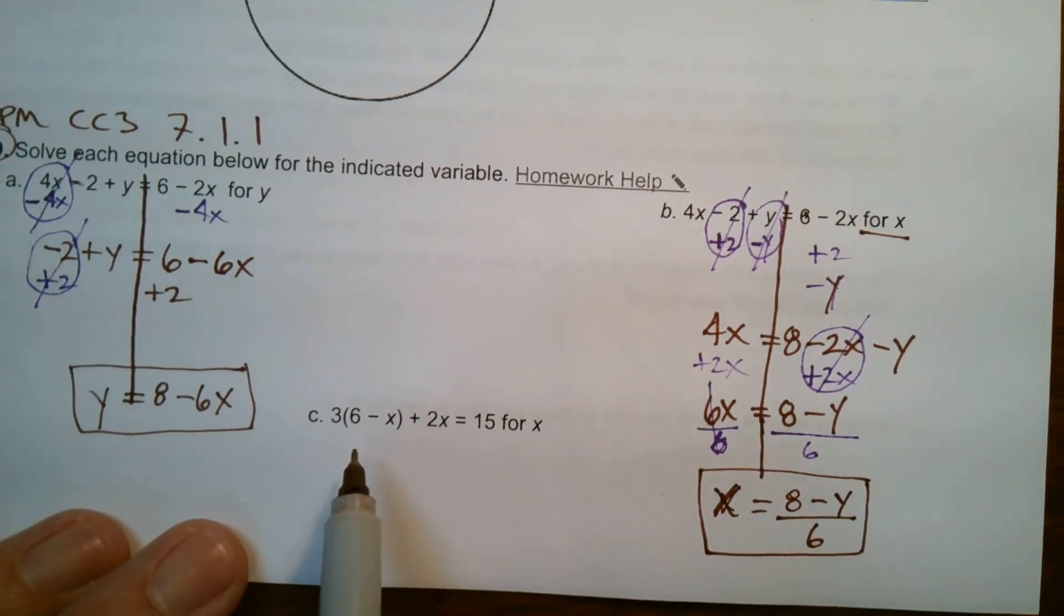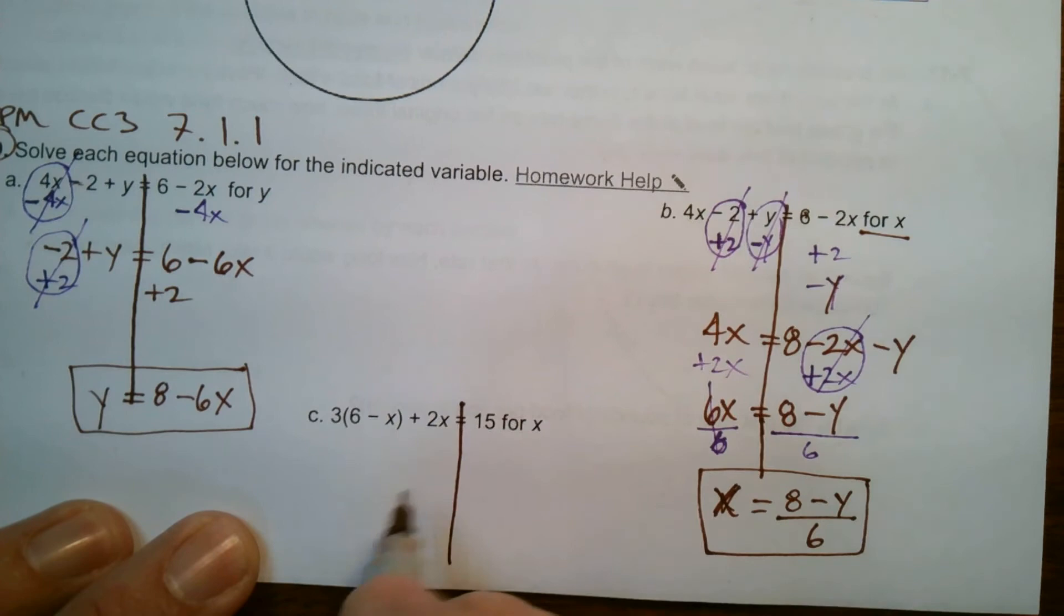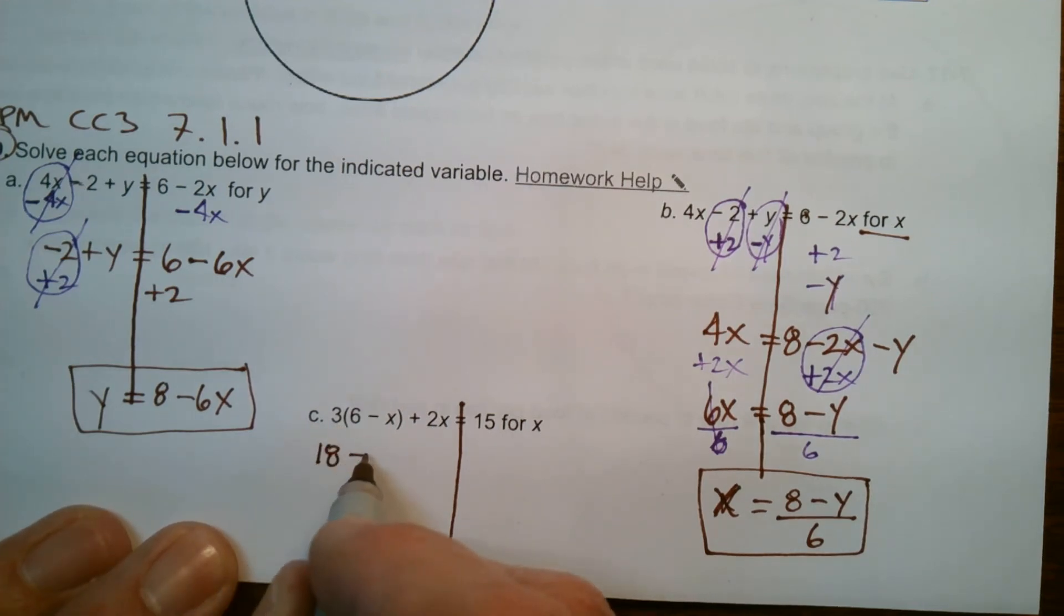Last one. This time solve for x. And if I look closely, that's all I see is just x's. So that's good. There's no other variables. And all my x's are on this side. So I'm going to have to clean this up first. Remember, the first step is always distribute, then combine like terms. So this becomes 18 minus 3x when I distribute the 3 plus 2x. Still that plus 2x in there. Now combine like terms.